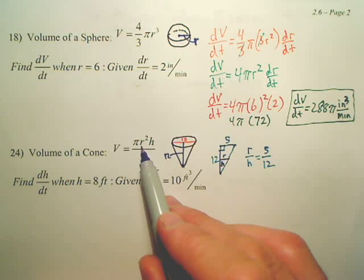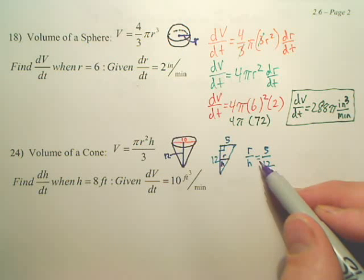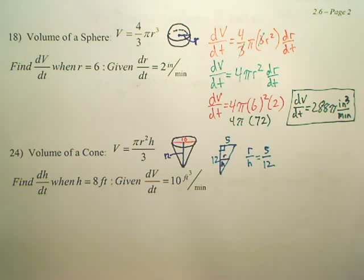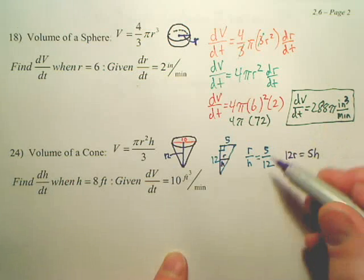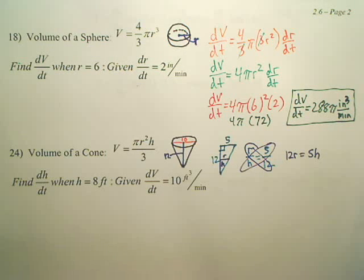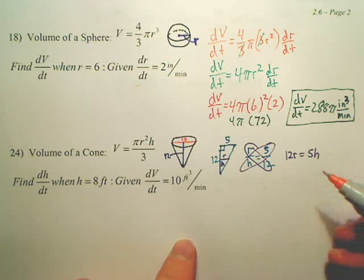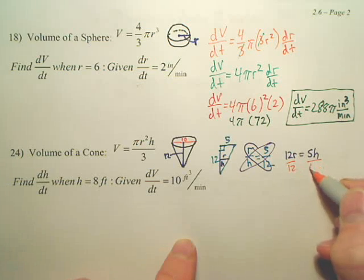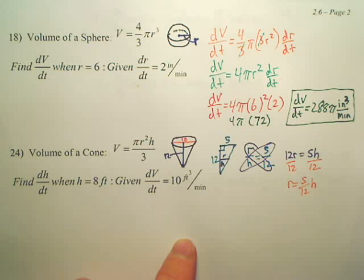What again did I want R to become? H. Could I solve this equation for R in terms of H? What I mean by that is, remember cross multiply? If I cross multiply, now did I want to solve for H or R? I want to make it an R equals, so you want to divide by 12, so R equals 5 over 12H. Why did I want to do that?